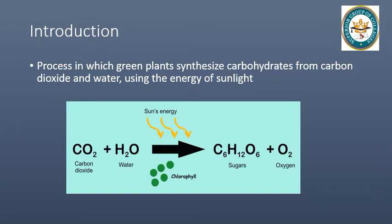Photosynthesis is a process of green plants — the plants prepare their food themselves. What is the process of photosynthesis? Carbon dioxide comes from the air, water comes from the soil, and sunlight comes from the sun.